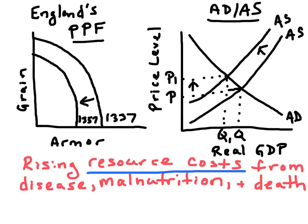So let's take England's production possibility frontier. If we looked at England, say 1337 — that's the start of the Hundred Years' War with France — during that time England wants to focus on producing food for the people and also goods for the war effort, so let's say armor. When the plague hits England between 1347 and 1348, we're going to see a decline in the production possibility frontier as England is losing thousands and thousands of potential laborers in their economy.